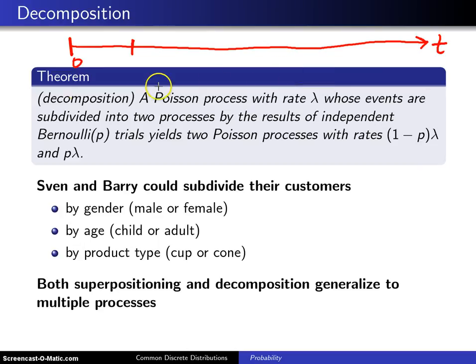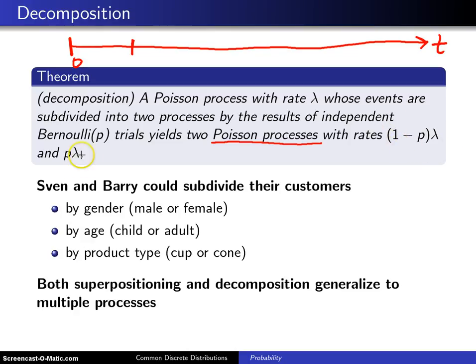That creates two different processes, and both of those processes are Poisson processes, with rates 1 minus P times lambda and P times lambda.